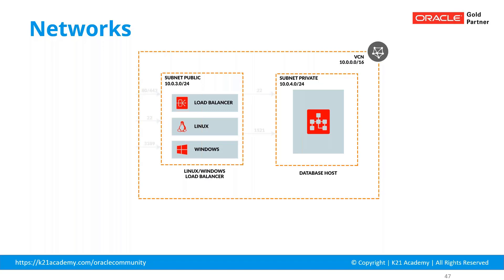Then you open appropriate ports. By default, everything is blocked in the cloud. There's a concept called a security list or network security group, which is essentially different types of firewalls. You open the firewall — you drill a hole — and say port 22 is allowed, but only from here to here. Or port 1521 — the database port — is allowed only from here to here. No one else can access those ports. Only someone within this network can access them, but my load balancers or Windows/Linux machines are listening on these ports, and I've opened firewall ports from the public subnet.